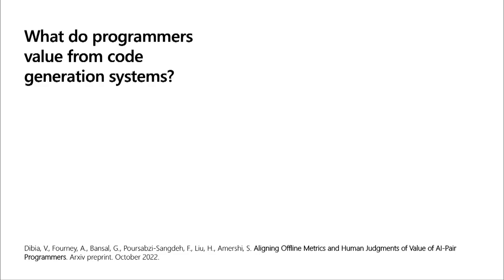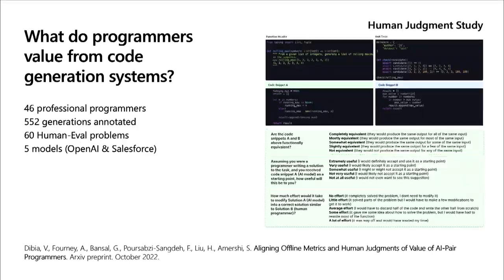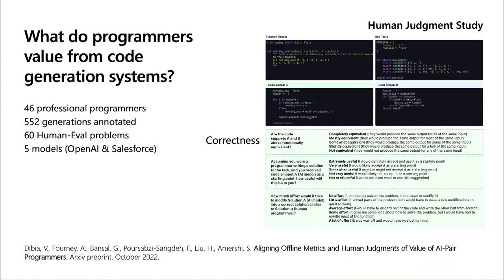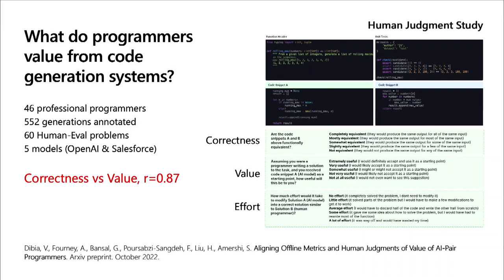We had 46 professional programmers annotate generations across 5 different models over 60 human evaluation problems, collecting 552 annotations. We asked them to annotate in terms of correctness, what they found valuable as a starting point, and how much effort it would take to convert a generation into a solution that passed unit tests. We found that correctness was correlated with value, but effort was almost perfectly correlated with value — and this difference was significant.